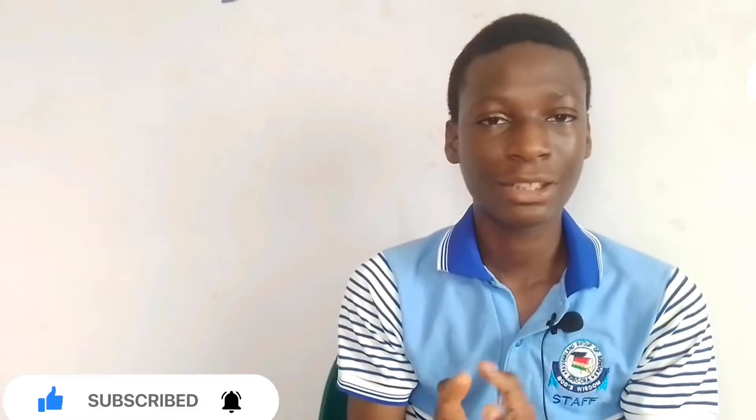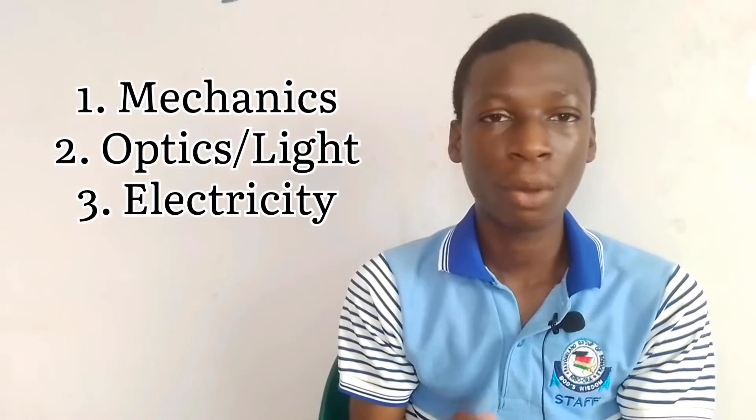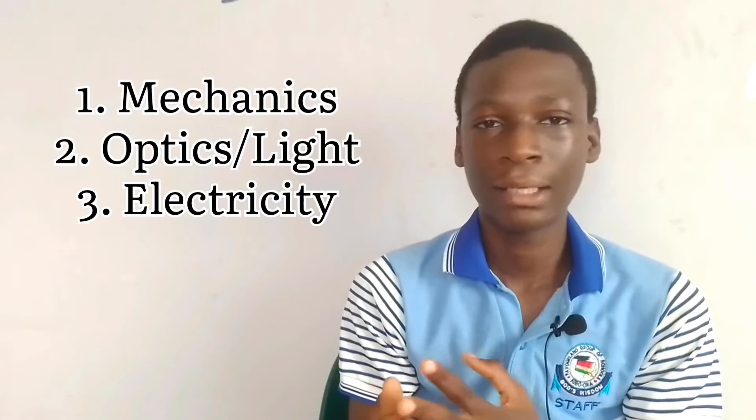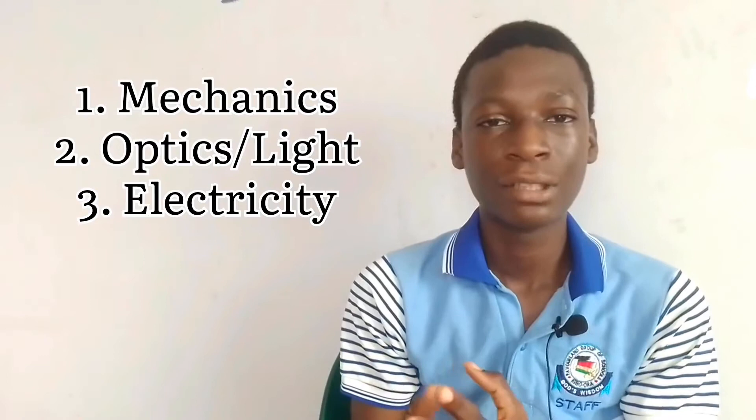Now, what are the basic things you have to know about physics practical to have a very good score? The first thing is that physics practical is divided into 3 aspects. We have mechanics, the second one is optics and light, which is usually number 2, and the third one is electricity. For the mechanics aspect, they ask questions on either movement, simple harmonic motion like simple pendulum, or spring balance. Those are the main questions you should expect in number 1 — equilibrium of forces, simple pendulum, or spring balance.